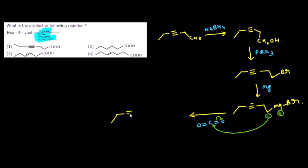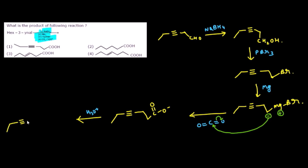After protonation with H₃O⁺, the final product contains the triple bond, one carbon, one more carbon, and then a COOH group — i.e., a ynoic acid. Searching among the options, this matches option A (first option). Answer: option A.